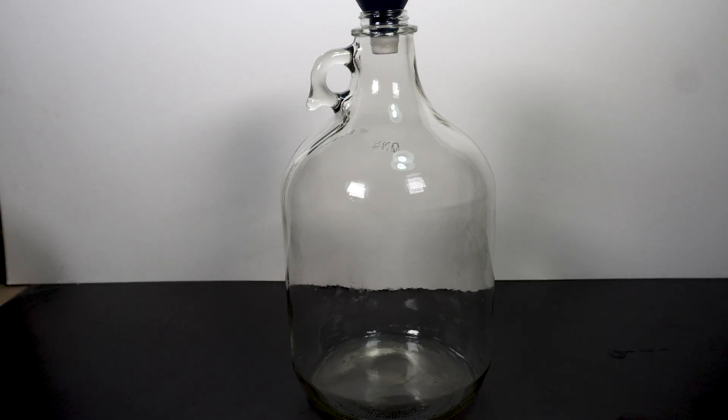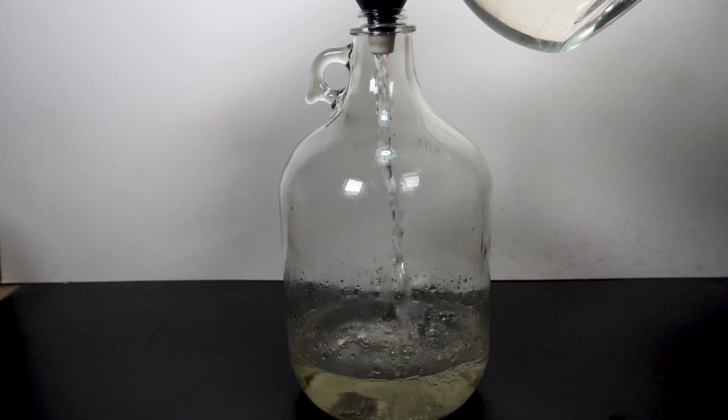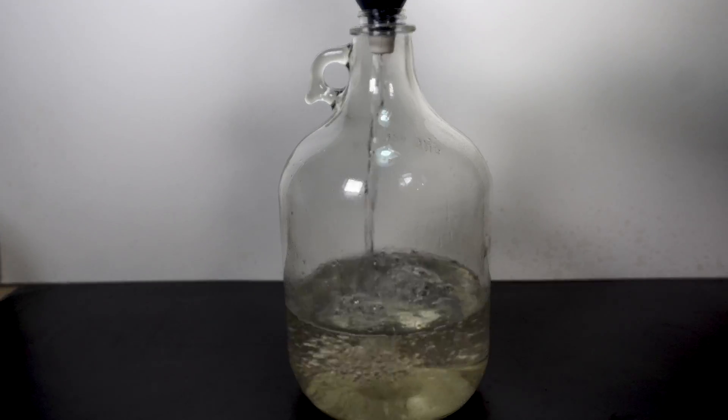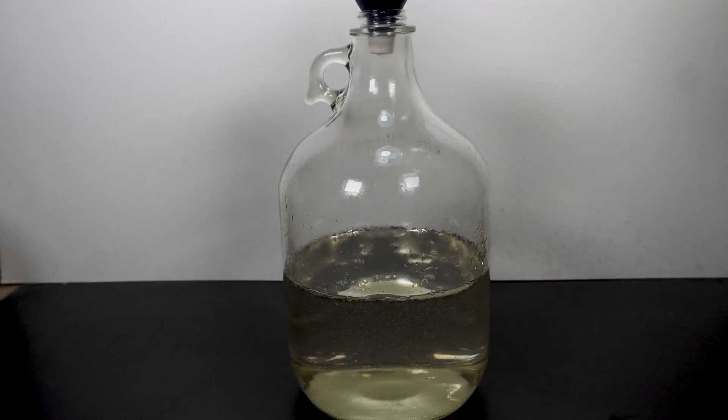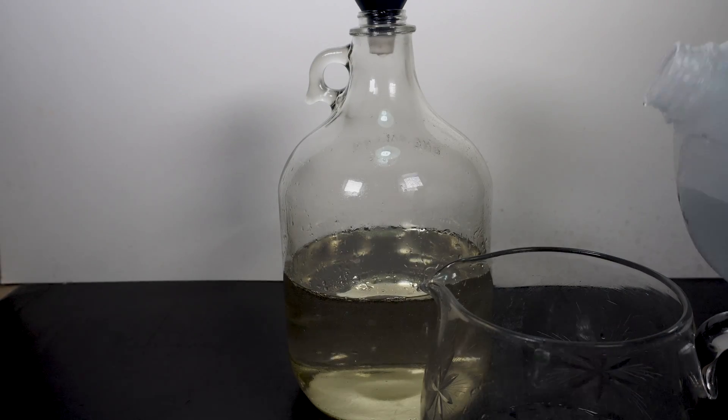Once everything cooled down, I added the sugar wash into my gallon jug, followed by rinsing my glass container that I used with a little distilled water, followed by adding that in too.